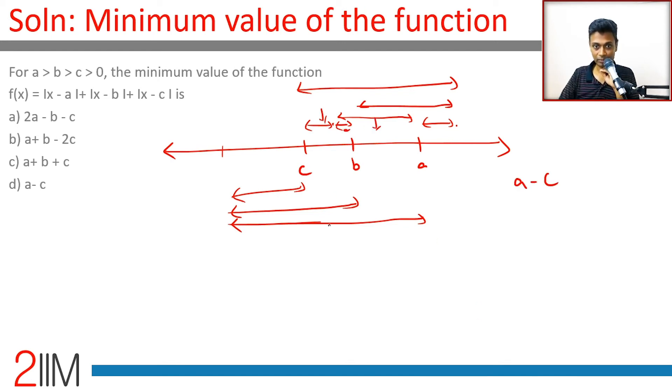then we have only this remaining. The best case scenario is when x = b. |x - b| goes to 0, and |b - a| + |b - c| is nothing